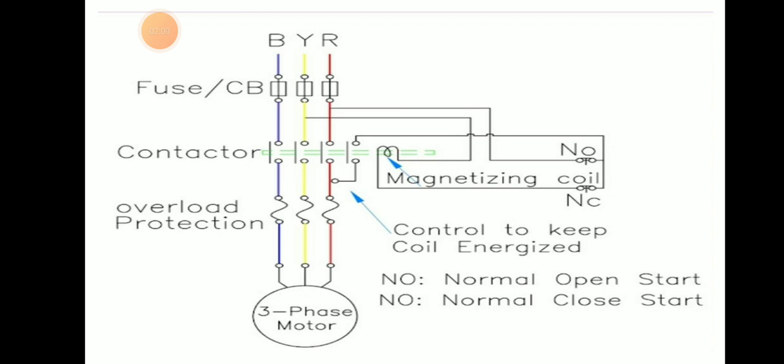MCB is used for protection against short circuit. The contactor is used for starting and stopping, and overload protection operates when there is excess current, protecting the motor from overload. This is a simple type of circuit compared to all other starters, which is why it can be used only for small motors and loads.